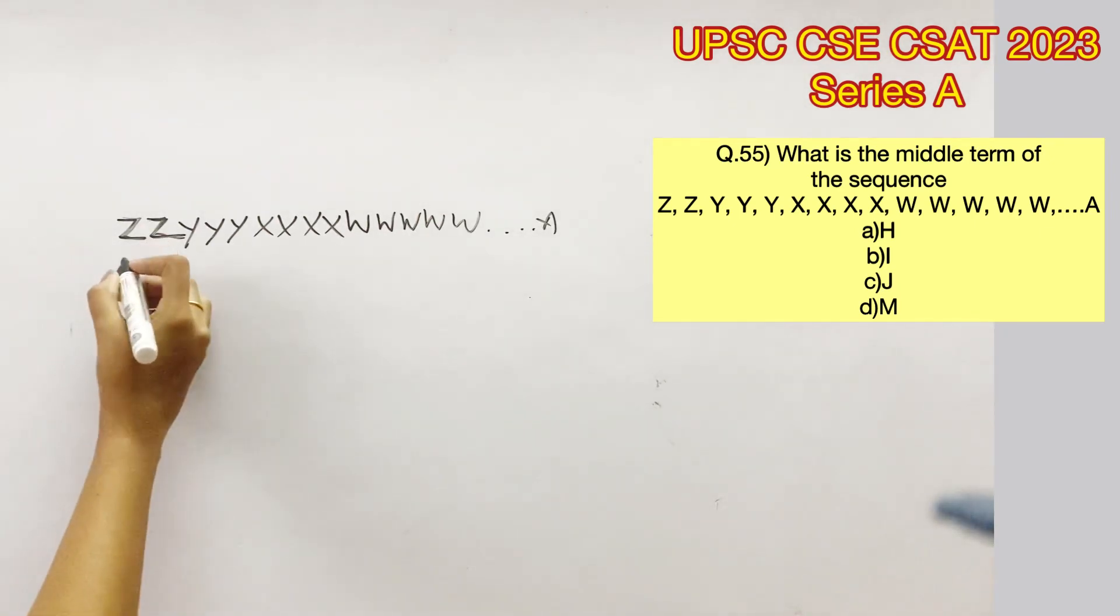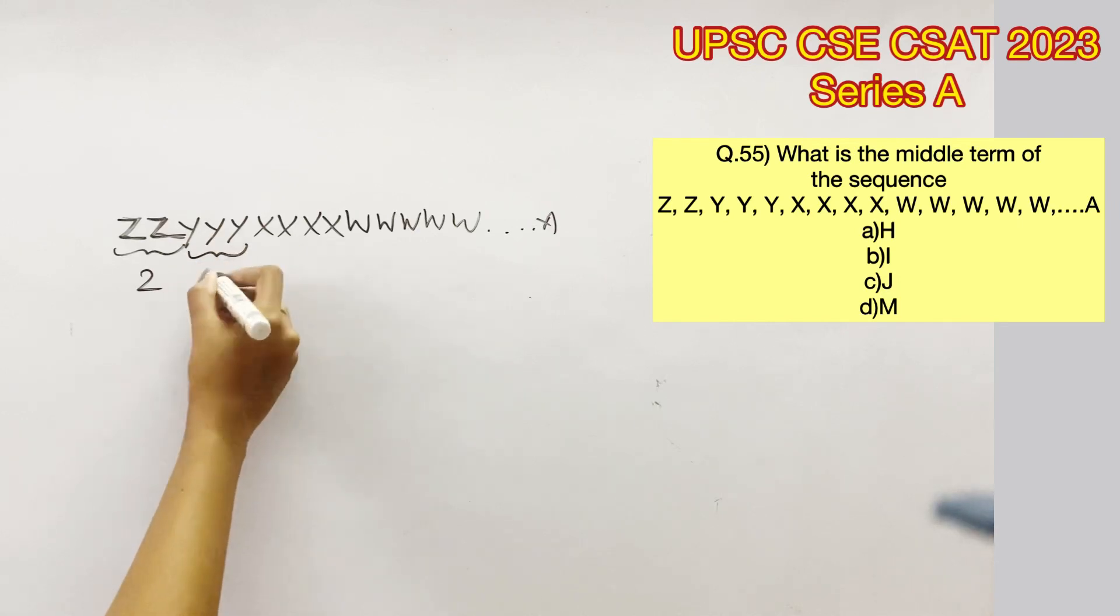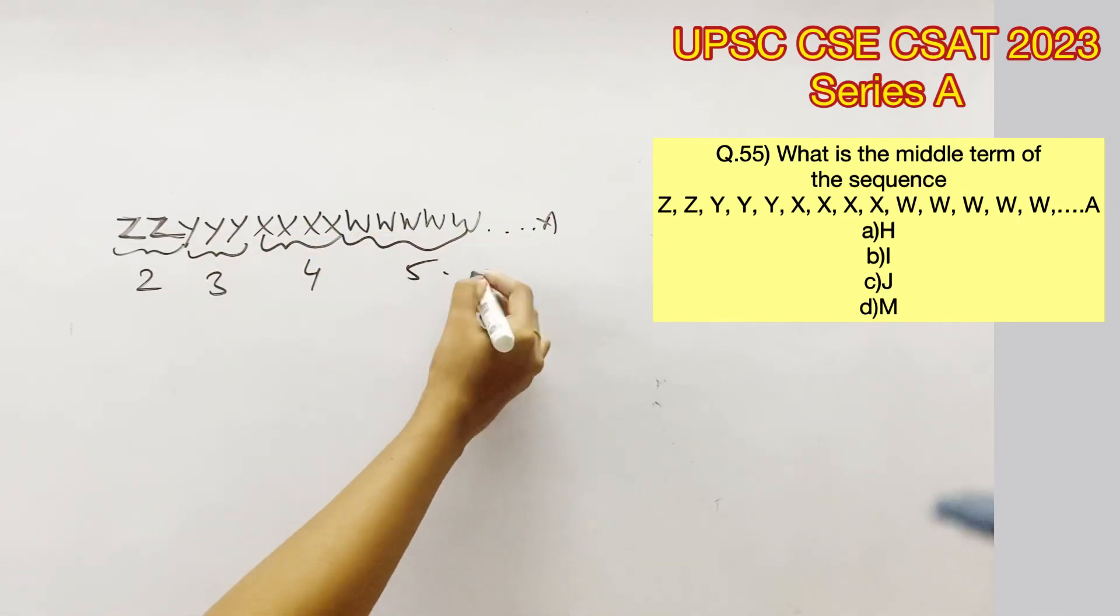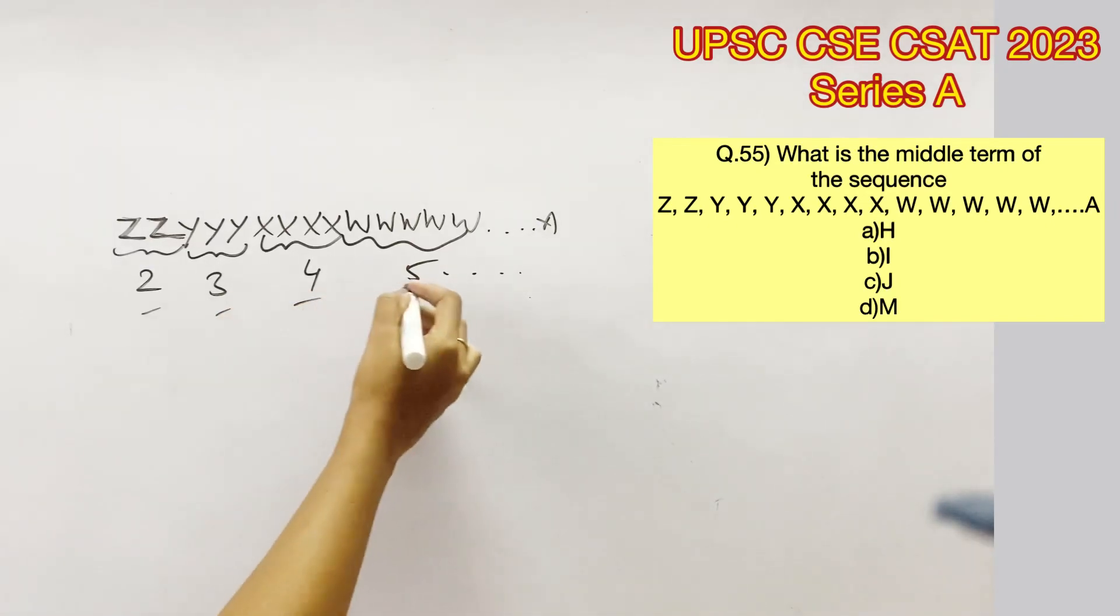If you notice, the first term repeats itself for 2 times, the second for 3 times, the third letter for 4 times and so on. So these numbers is going to go on for 26 times because there are 26 letters in the English alphabet.